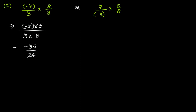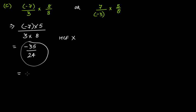If you want to simplify, check whether there is any highest common factor. In this case there is no highest common factor, so this is already in its simplified form. If you want to write it with the minus sign in the middle, you can write it that way as well.